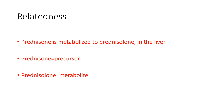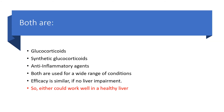Relatedness. Prednisone is metabolized to prednisolone in the liver. So prednisone is the precursor, while prednisolone is the metabolite. Both are glucocorticoids, specifically synthetic glucocorticoids. They are both anti-inflammatory agents and could be used for a wide range of conditions. You can check my channel for the presentation on prednisone to get the full list of conditions.